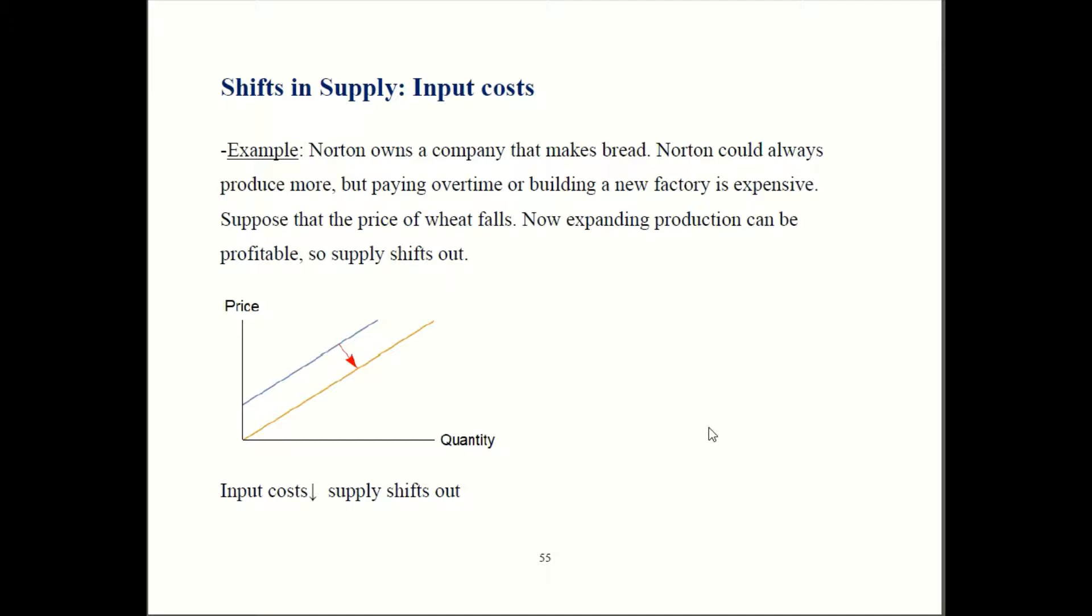As a result, that expansion of production, which involves either paying your workers overtime or buying a factory, can now be worthwhile because you're saving money on wheat. So now you can produce more, which means your supply curve, let's use our terminology properly, supply curve shifts out. So we used to supply this amount over here on this blue line, but now we're expanding and we're down over here now.